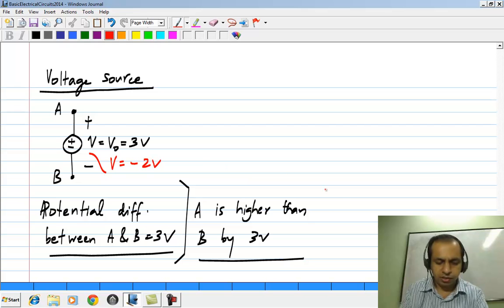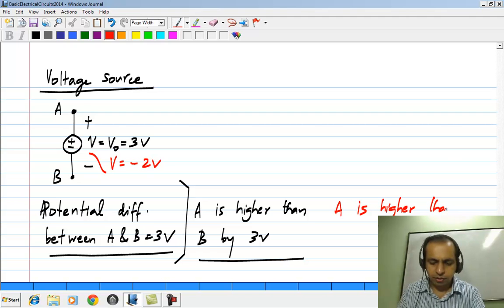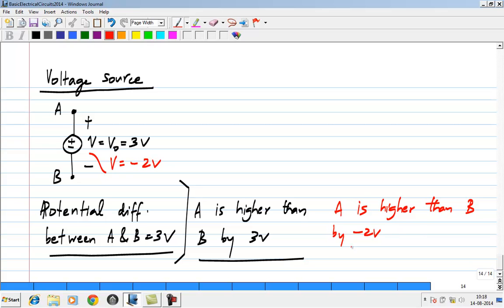What it means is that A is higher than B by minus 2 volts, which is equivalent to saying A is lower than B by 2 volts.